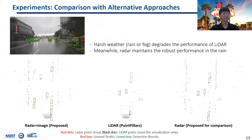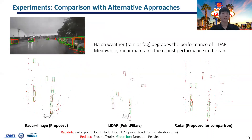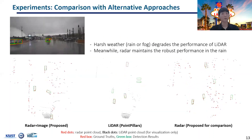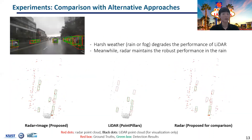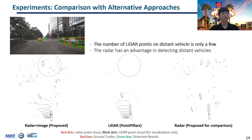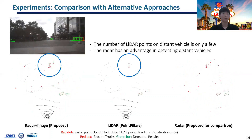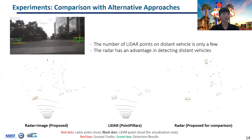In rainy environments, the number of LiDAR points decreases and it leads to a performance drop of the LiDAR method. Meanwhile, the radar maintains performance regardless of weather conditions. In this scenario, we observed that the number of LiDAR points on distant objects is only a few. However, the number of radar points remains relatively constant regardless of distance. This shows that radar has an advantage in detecting distant objects.